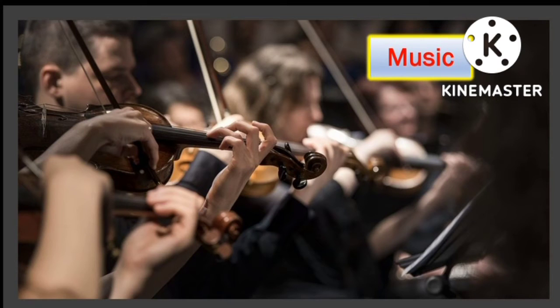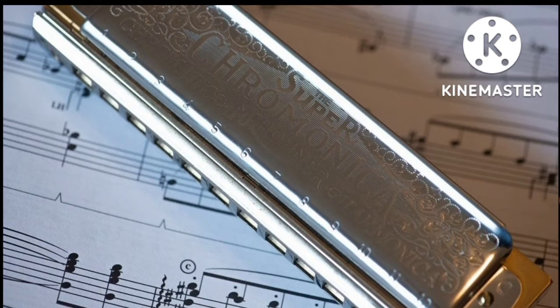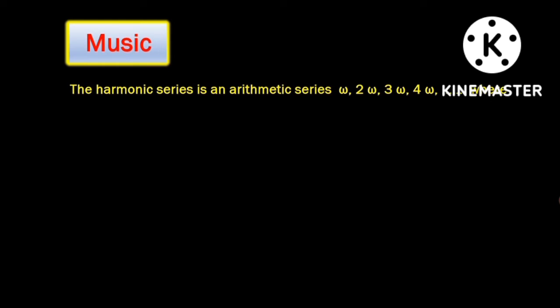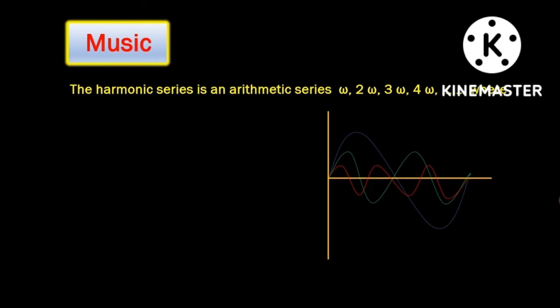Let's now see how arithmetic progression contributes to the world of music. Apart from the main note of frequency omega, you will also hear a frequency that is twice as fast, that is 2 omega; thrice as fast, that is 3 omega; 4 times as fast, that is 4 omega, and so on. This in music is known as harmonics, and it beautifully follows the arithmetic progression where the first term A is omega and the common difference D is also omega.